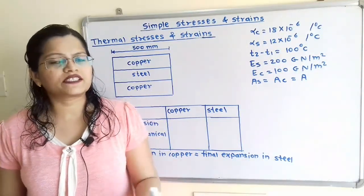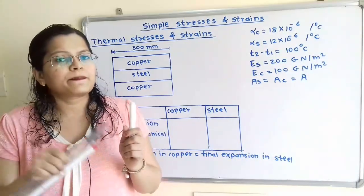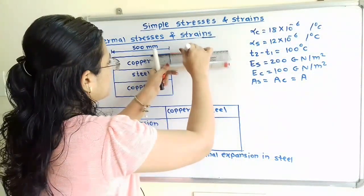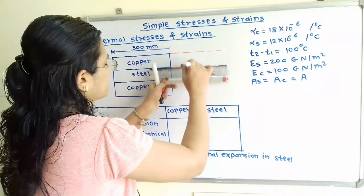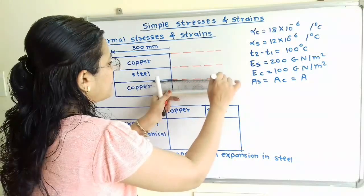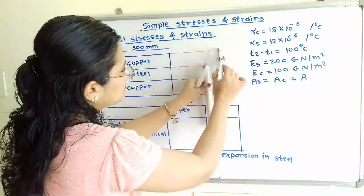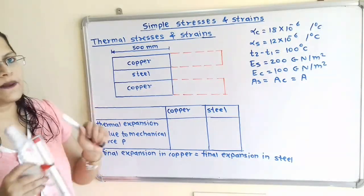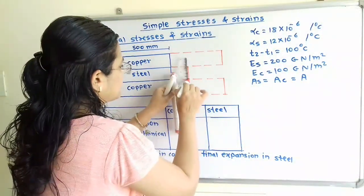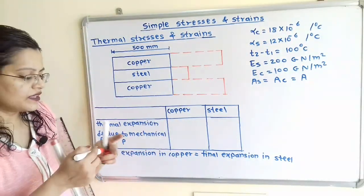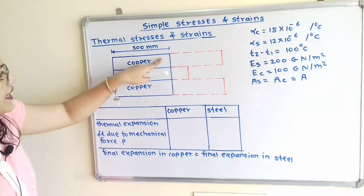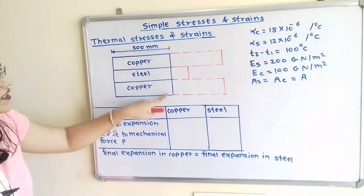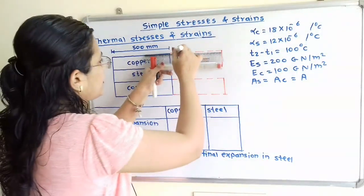We will first show the free expansion in copper as well as steel when the temperature is increased by 100 degrees Celsius. First we will show the extension in copper — there are two copper bars, so we have to show the same extension for both. Then we have to show the extension in steel. Since the ends are rigidly connected, there is a common extension for this combination of bars, which we will show here.